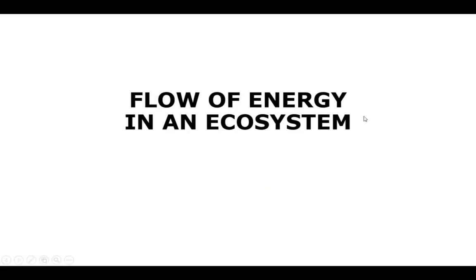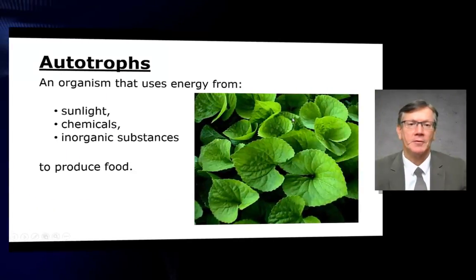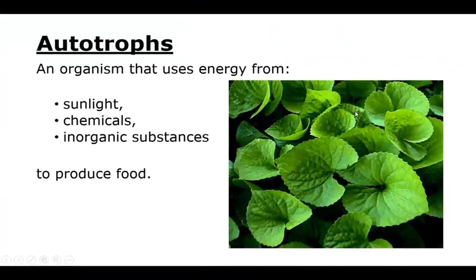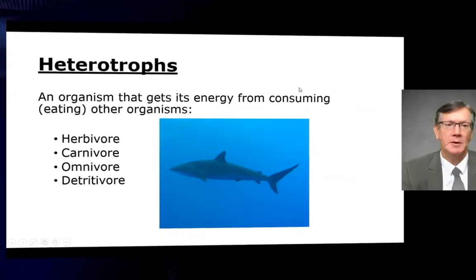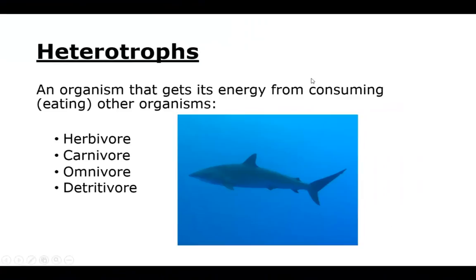The flow of energy in an ecosystem. Autotrophs are organisms that use energy from sunlight, from chemicals, or from inorganic substances to produce food. A heterotroph is an organism that gets its energy from consuming or eating other organisms. Herbivores, carnivores, omnivores, and detritivores are all heterotrophs because they consume other organisms for energy.